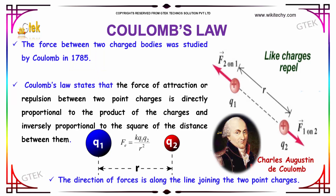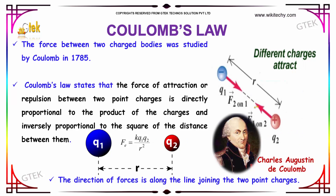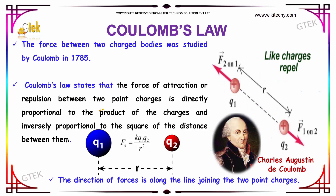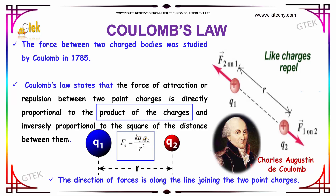According to Coulomb, he states that the force of attraction or repulsion between two point charges is directly proportional to the product of charges and is inversely proportional to the square of the distance between them. Q1 and Q2 represent the product of charges, whereas R is the distance representing the inverse proportionality of the square of distance.